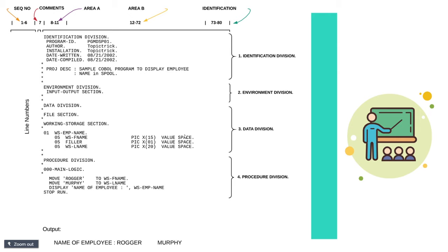The first division is identification division — this is where you write the name of the program, who is the author, where exactly the compilation is done. The second is environment division, which specifies what input/output files you will be using. Third is data division, which specifies the definitions of files, the structure of a file, and working storage variables. The last is procedure division — this is where you write your complete logic. In this program I'm printing the name of an employee, so the output will say: name of an employee is Roger Murphy.